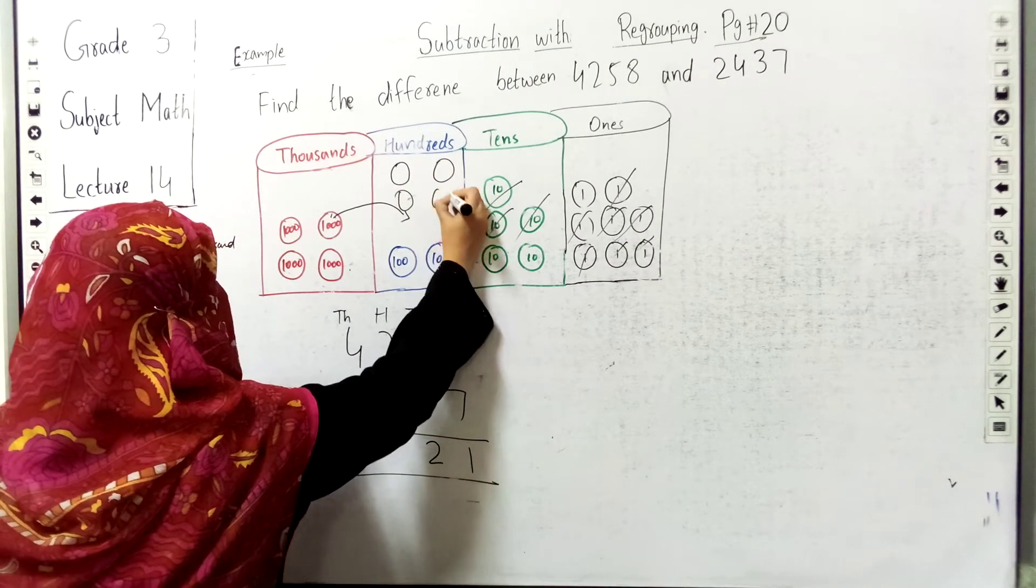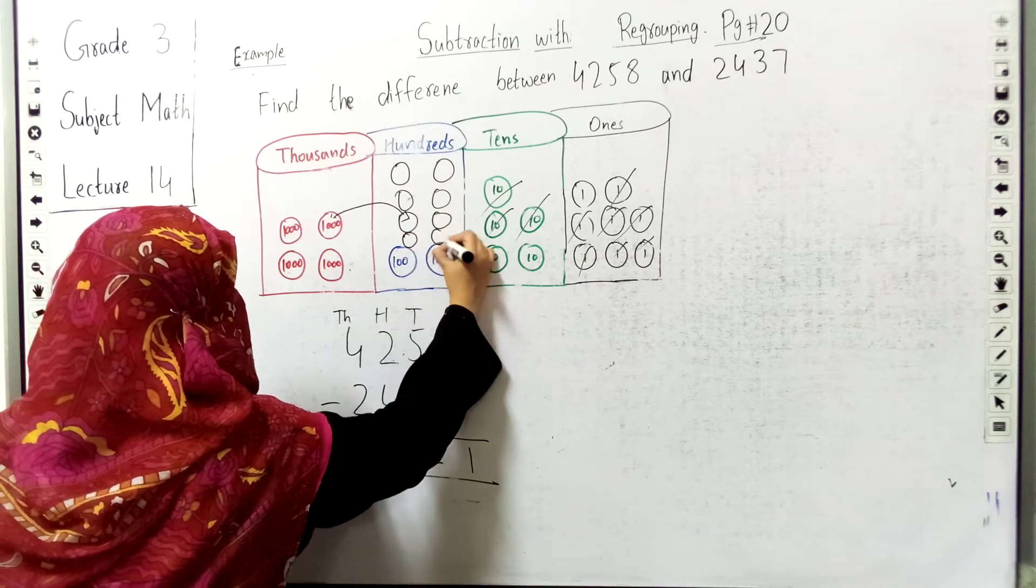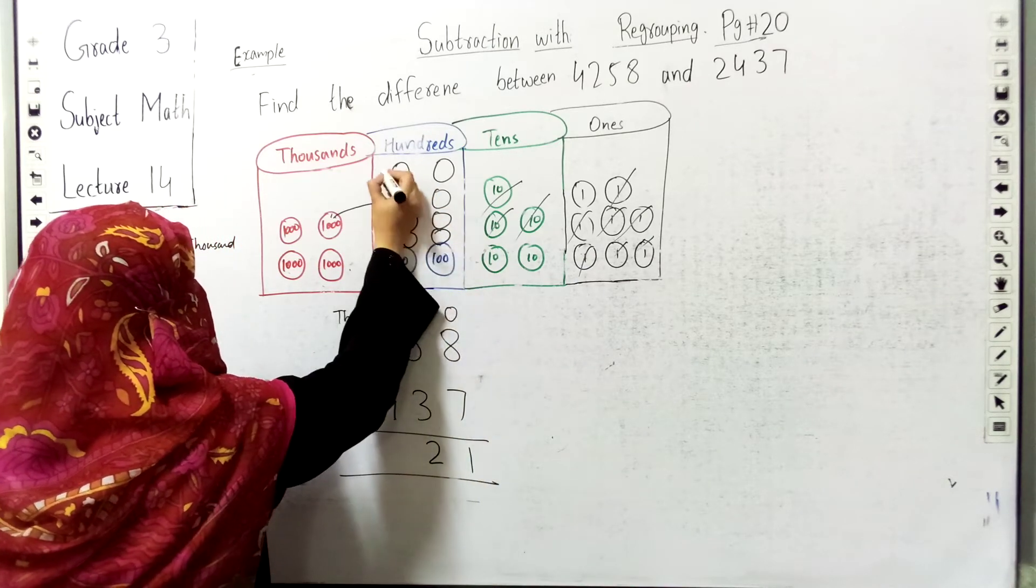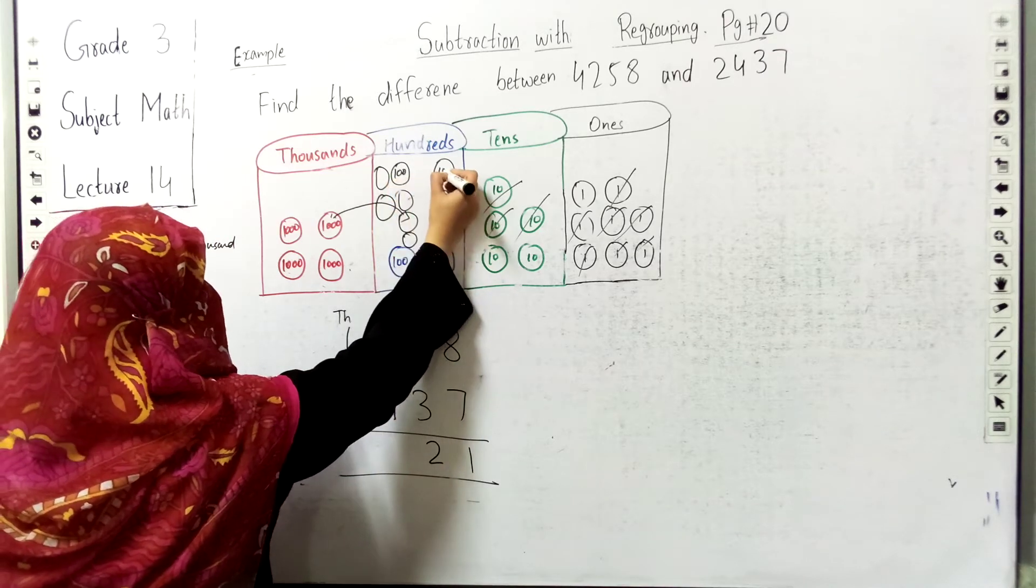One, two, three, four, five, six, seven, eight, nine, and ten. So these are the hundred blocks that make one thousand.